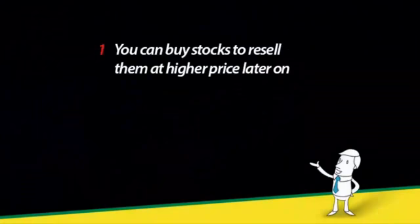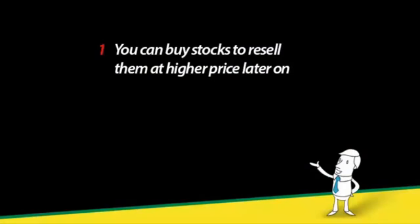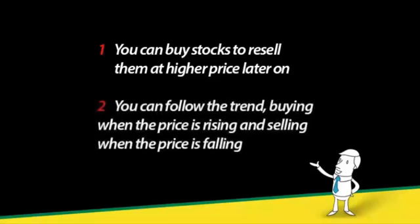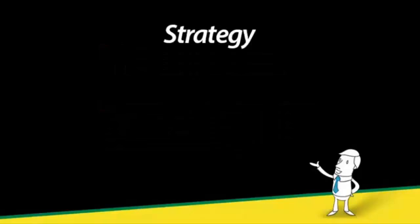You can buy stocks to resell them at a higher price later on, but in this case it all depends on supply and demand, and the stock price could decrease even further and never get back to the price at which you bought it. A second option is to follow the trend, buying when the price is rising and selling when the price is falling. This is exactly what this handful of traders is doing — winning large amounts of money by making bets on the stock market with a single click of a button. And to make a long story short, they play against the system.